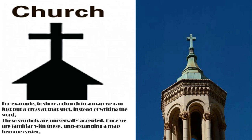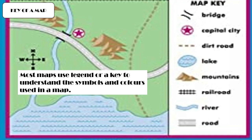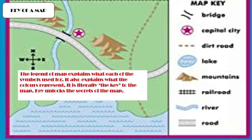Once we are familiar with the symbols, reading a map becomes much easier. To understand which symbols and colors are used in a map, most maps include a legend or key. The legend explains what each symbol stands for and what the colors represent. It is literally called the key to the map because it unlocks the secrets of the map. Knowing the elements of a map helps us understand maps better and locate any place more easily.